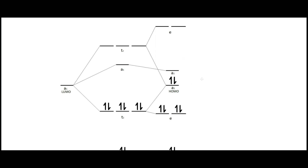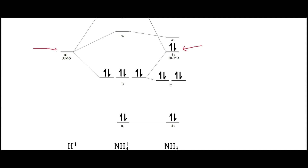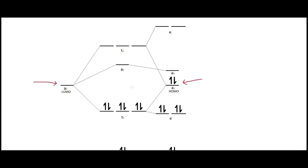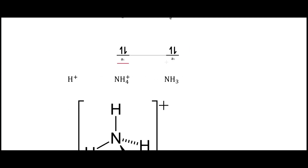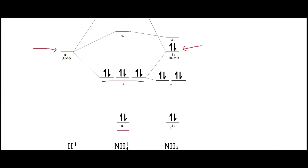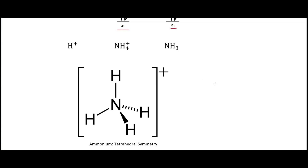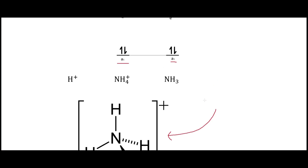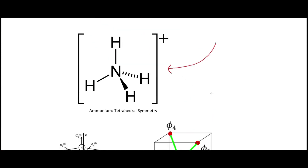For ammonia we have the HOMO right there, and for H⁺ we have the LUMO right there — these are pretty close in energy. We end up with these three tetrahedral molecular orbitals and this a₁ symmetry orbital, which is an s-type orbital. When we put those together we get tetrahedral symmetry on our ammonium, giving us four different bonds.